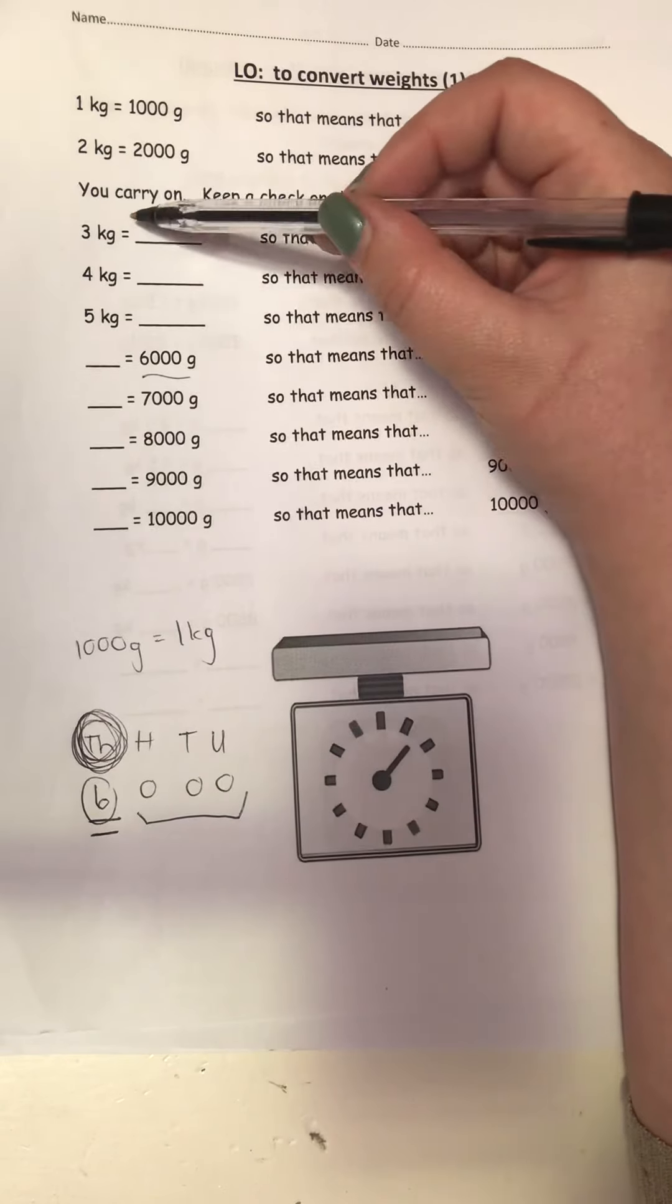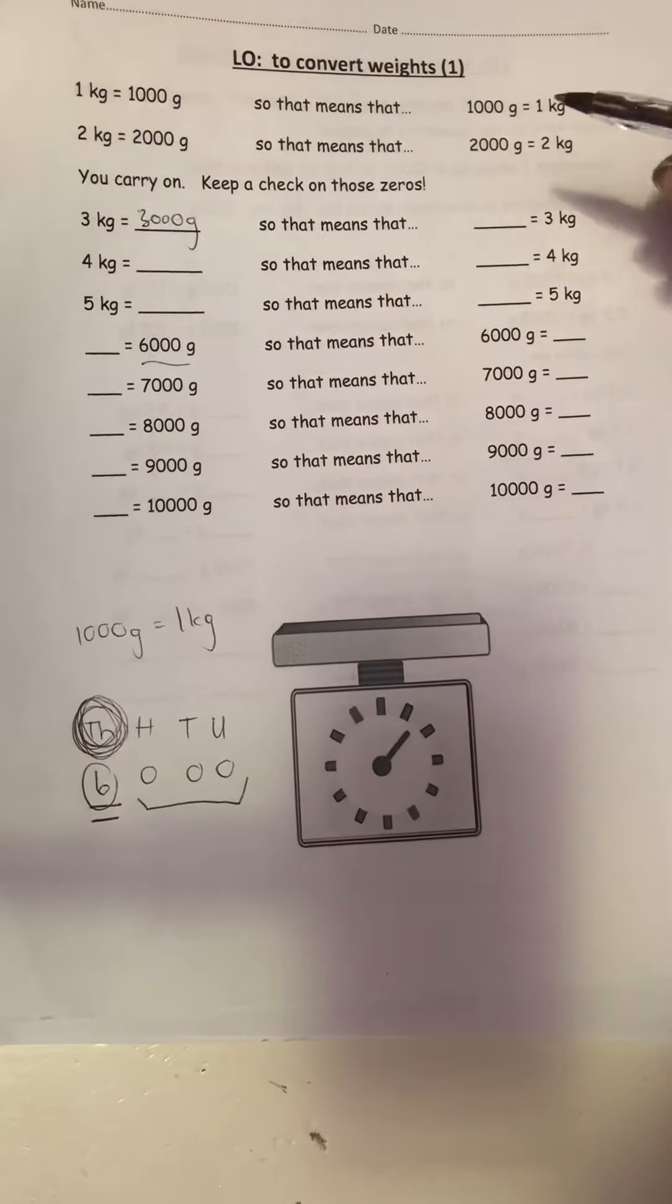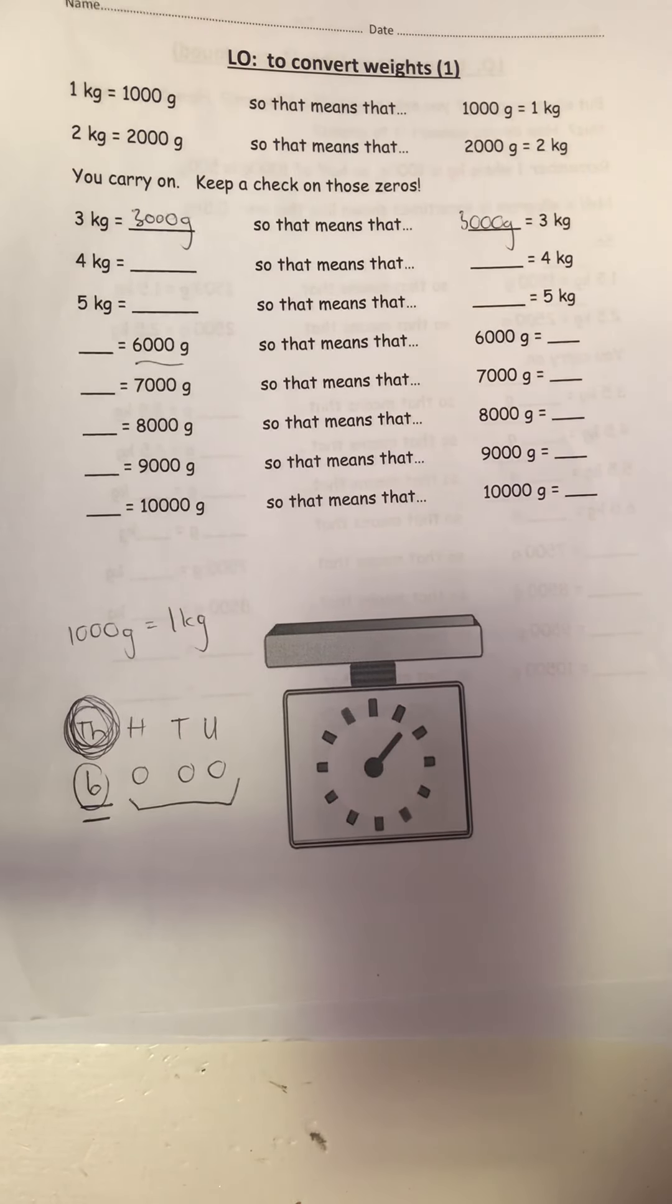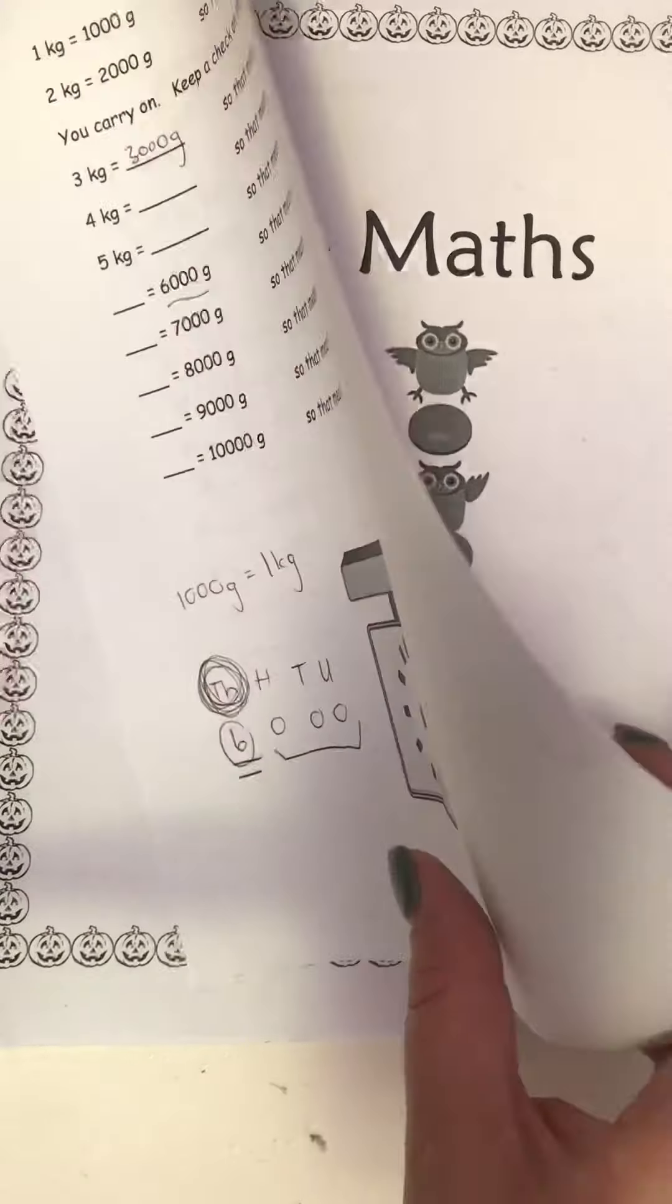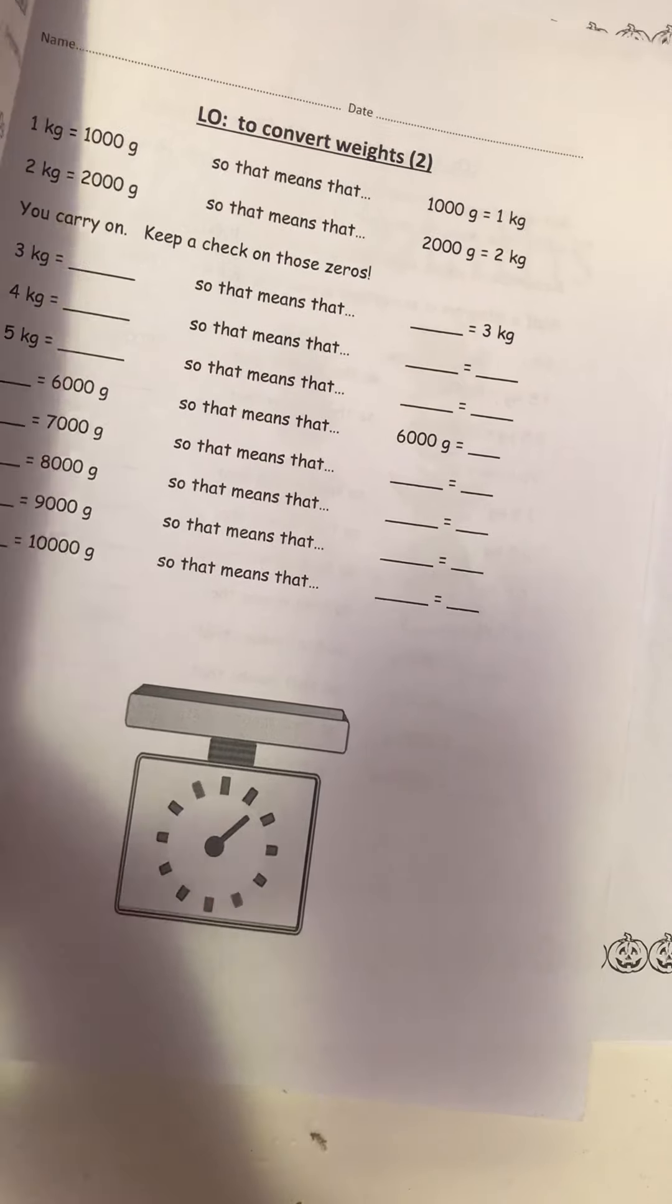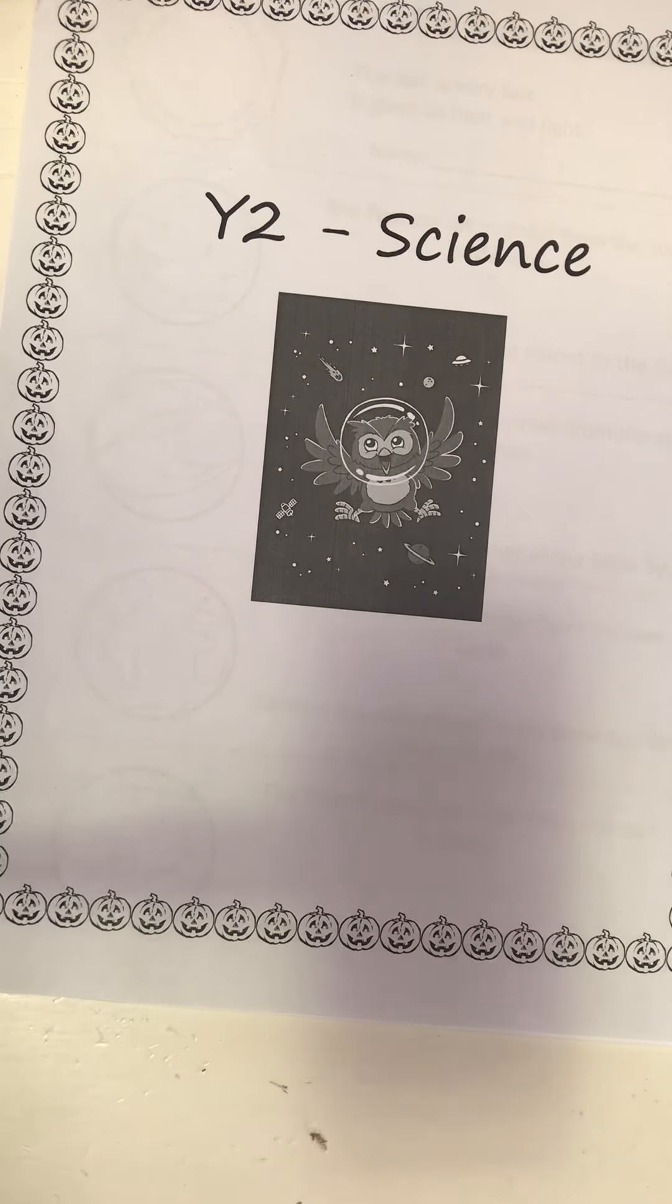What you'll have to do: 3 kilograms equals 3,000 grams, so that means that 3,000 grams equals 3 kilograms. You just have to show me that it works the same both ways. And then you can do the last worksheet by yourself as well. That is your maths, your five worksheets. Do all five of them and then you are finished with maths for the day.